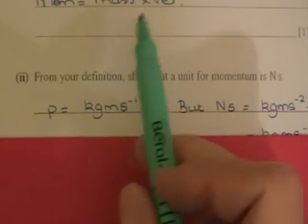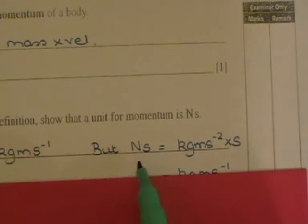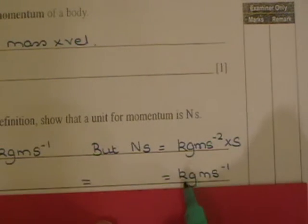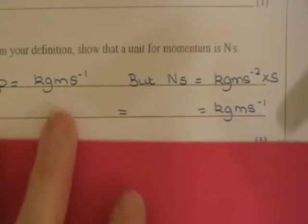From your definition, show that a unit for momentum is newton seconds. We know momentum is kg·m·s⁻¹. Looking at newton seconds: newtons are measured in kg·m·s⁻² in base units, and multiplying by seconds, you lose one of the s⁻², giving kg·m·s⁻¹. So newton seconds is also the same as kg·m·s⁻¹.